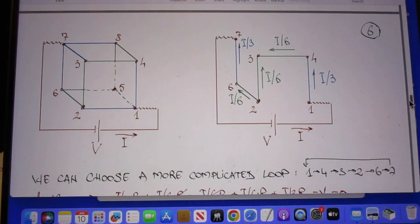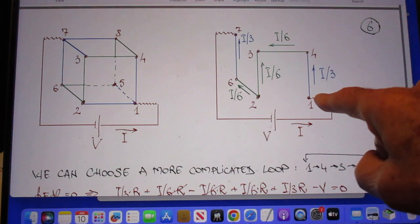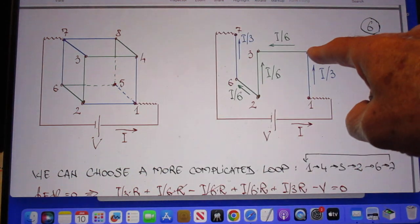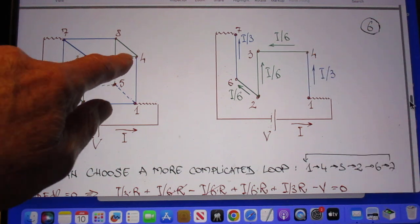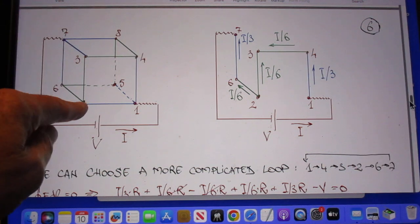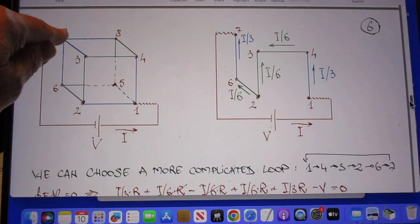He chooses here a more complicated loop just to show you that it gives the same result. So he now goes in at one, goes to four, goes then to three, goes then to two, and goes then to six and comes out at seven.